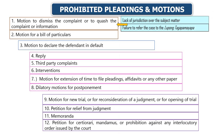Let's recall Section 19 on prohibited pleadings and motions. For criminal cases, take note that a motion to quash the complaint or information is a prohibited motion. But if your ground is lack of jurisdiction over the subject matter or failure to refer the case to barangay conciliation, then you can file a motion to quash. Also take note — memoranda is a prohibited pleading.